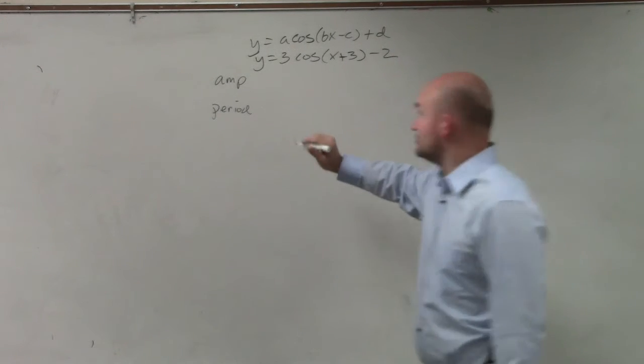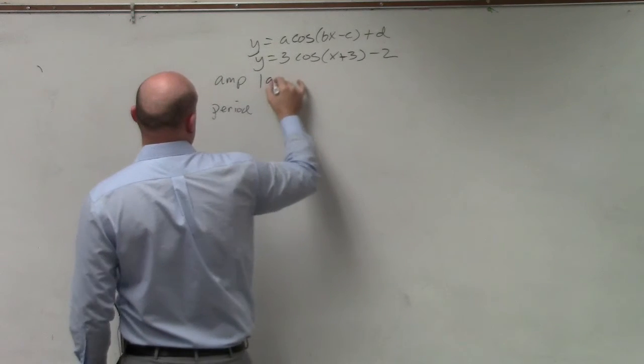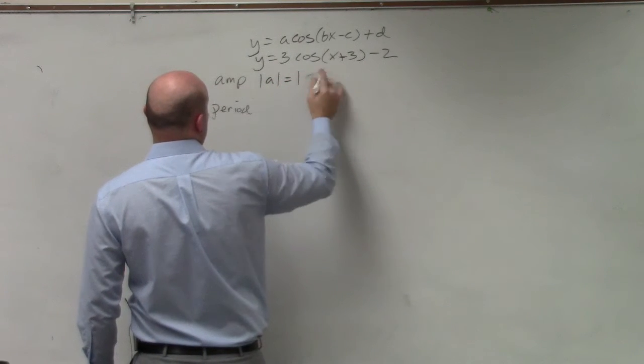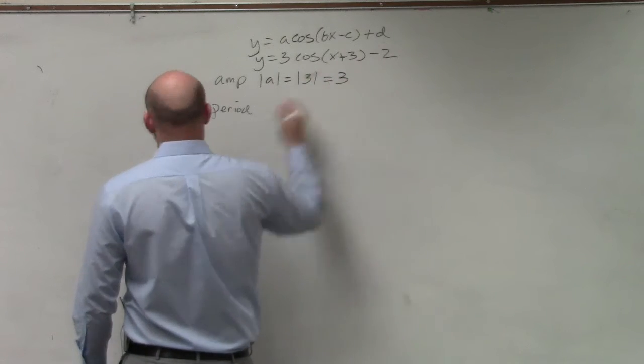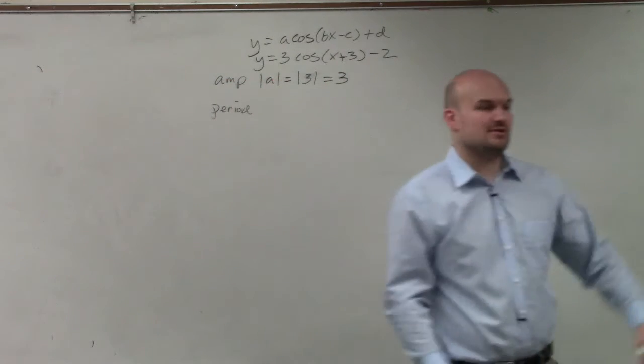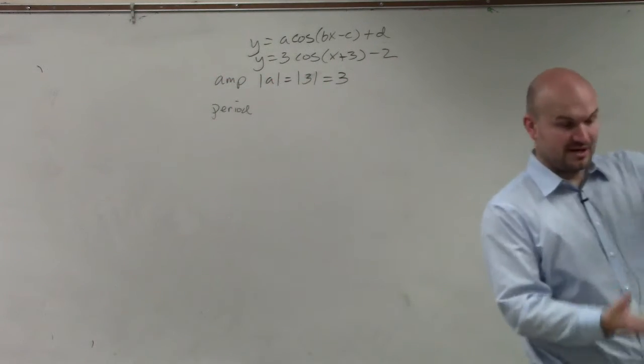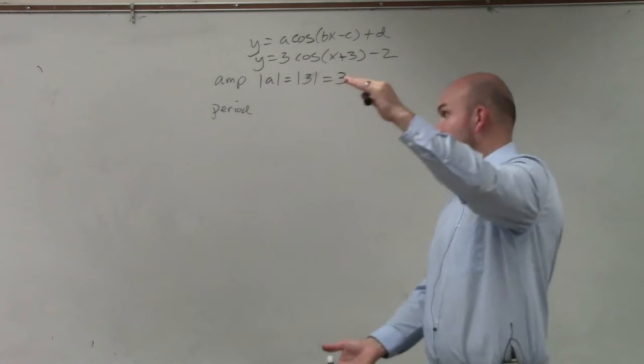So the amplitude, ladies and gentlemen, is just the absolute value of a, which is the absolute value of 3 in this case, which is just 3. That means the graph goes as high up as 3. Oh, I'm sorry. The graph from the max to the min has a distance of 3.